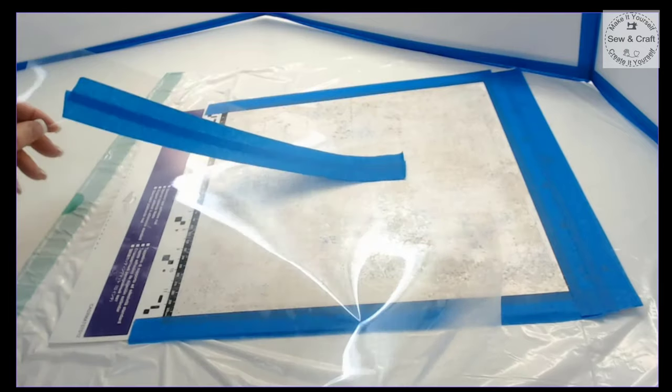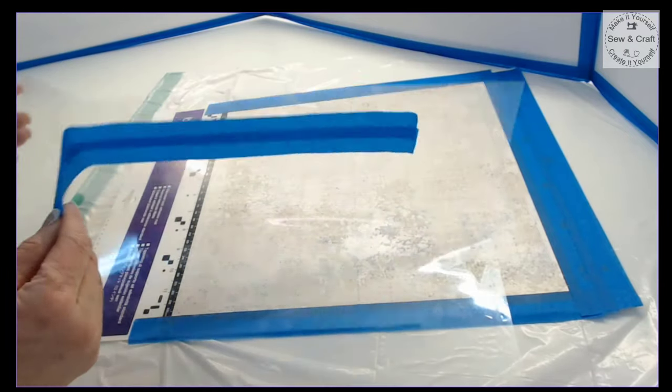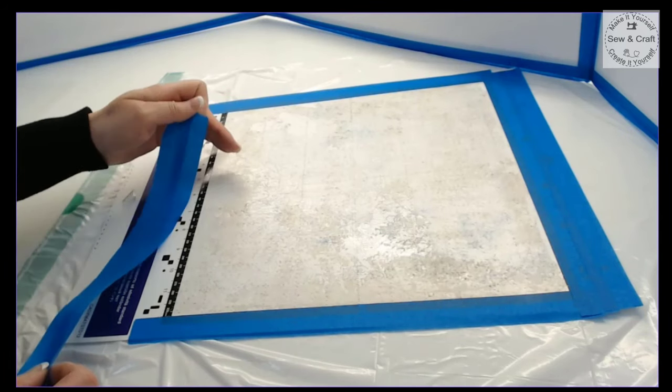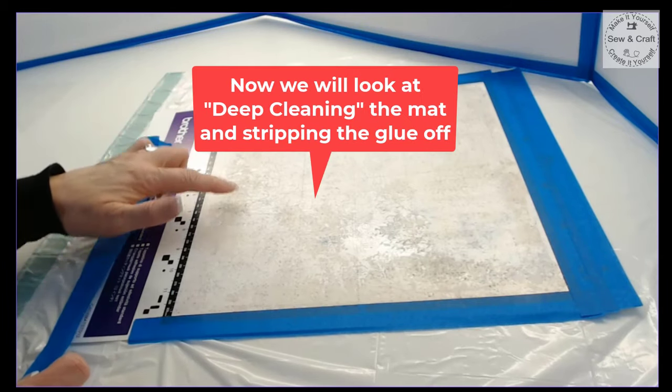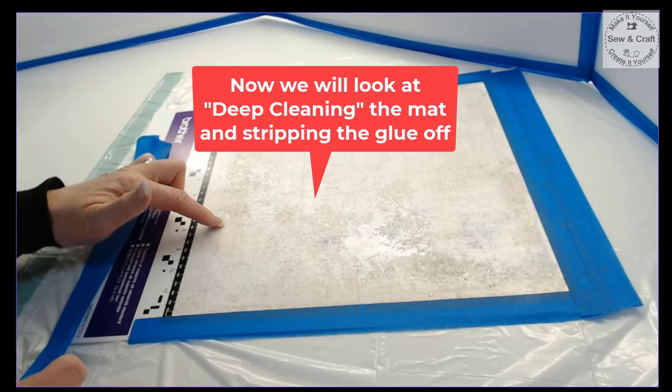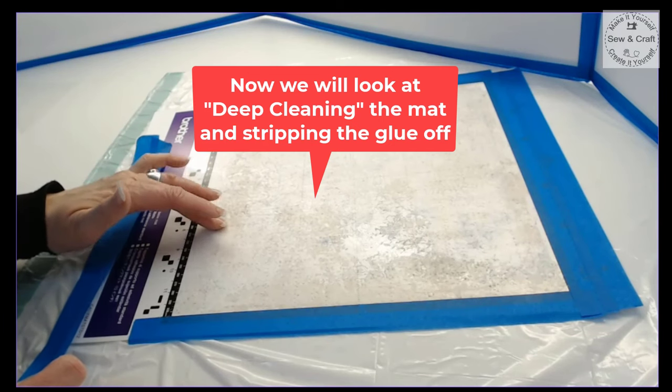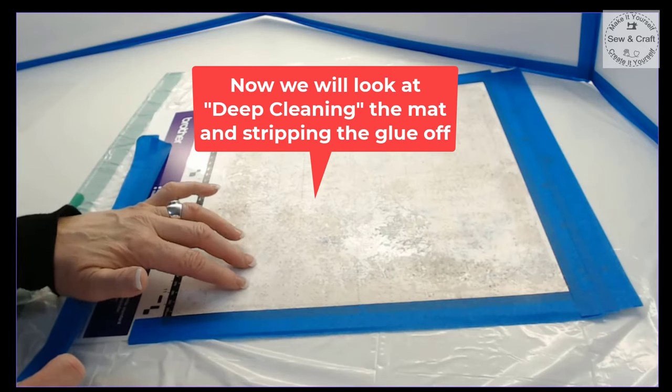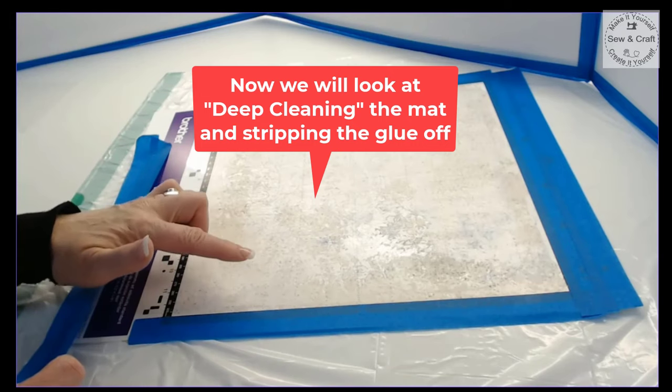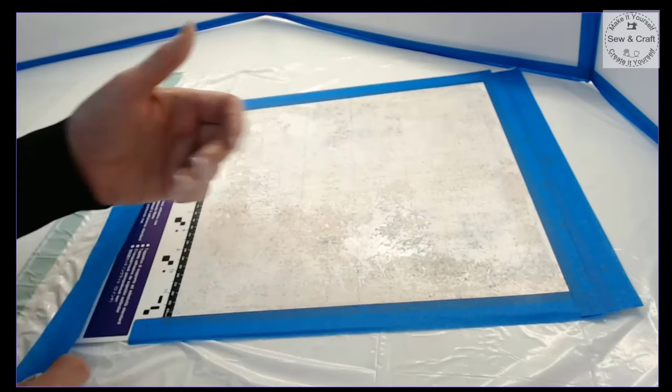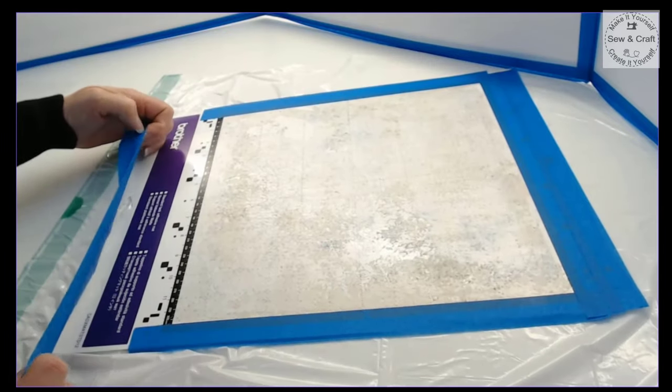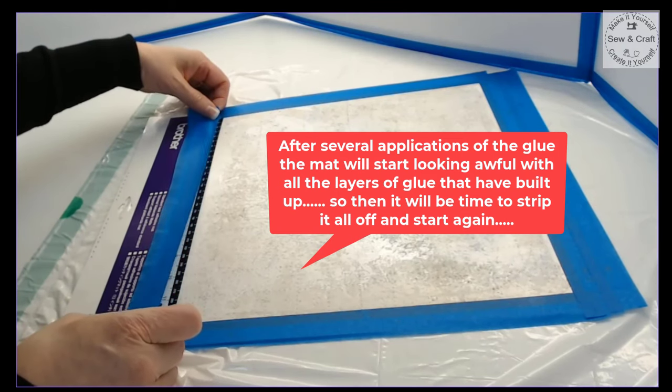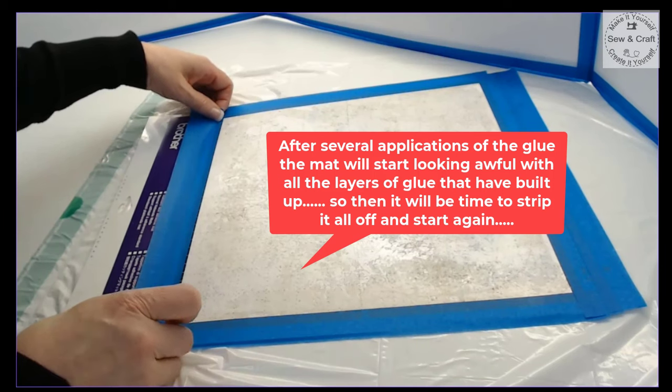Then each time I want to do this process I can quickly lift them off and pop them onto my mat. Obviously after a little while after you've used them a couple of times then it would be time to throw them away and cut yourself some new strips. But for now I'm going to pop this back on top of my mat because now I'm going to show you how to clean all of the excess glue off. After you have sprayed this adhesive onto the mat a couple of times it eventually builds up and it starts to look awful. My mat is at that stage where it is starting to look awful so I am going to now strip all of this glue off of the mat and then resticky it again.